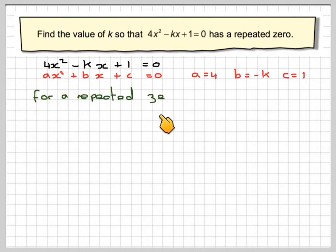Now, for a repeated zero or repeated root, b squared minus 4ac must be equal to 0. This is called the discriminant.